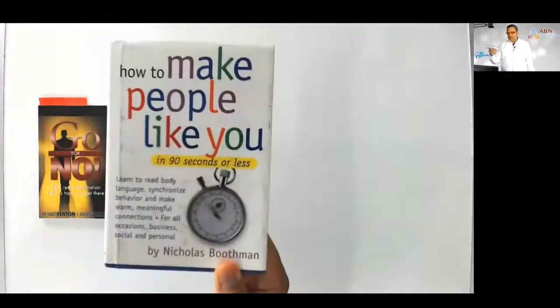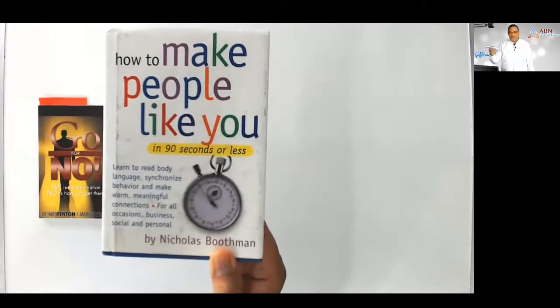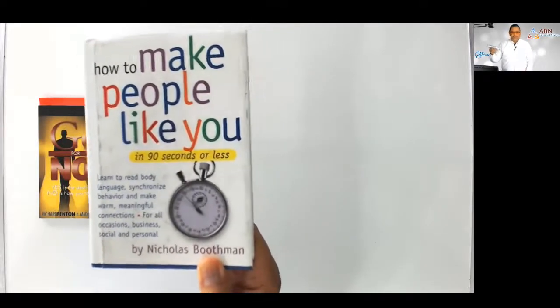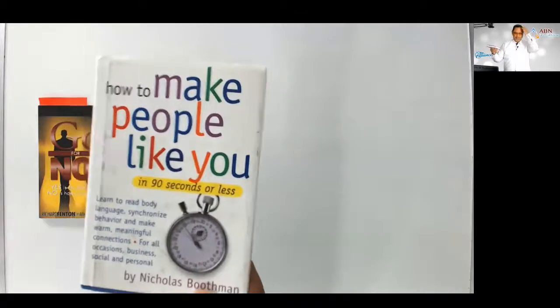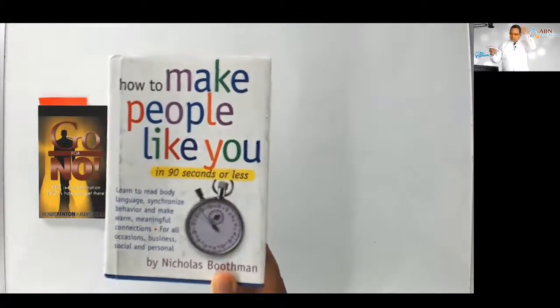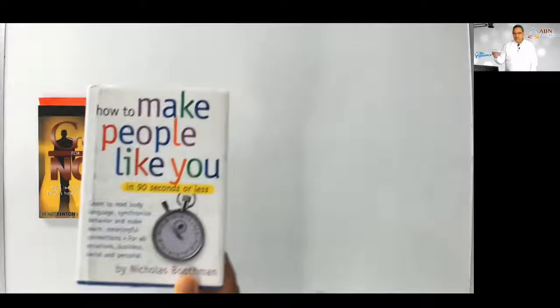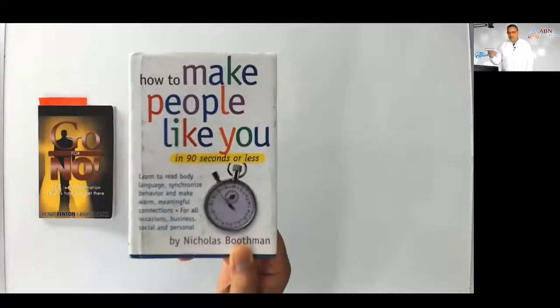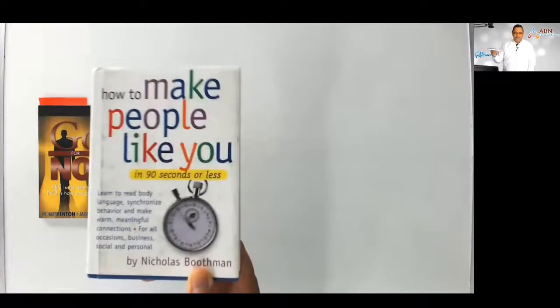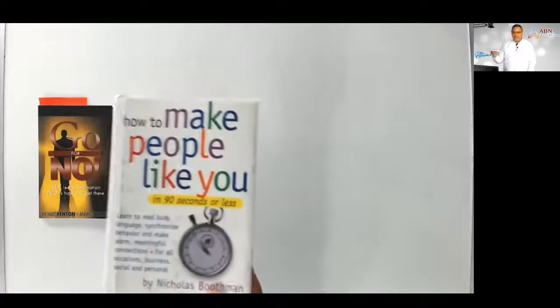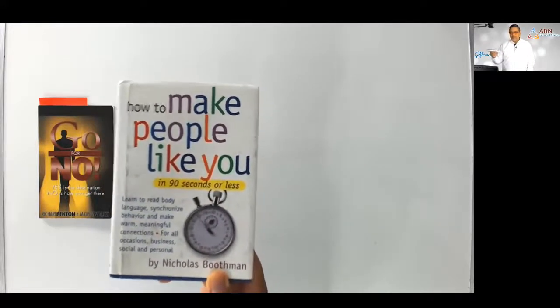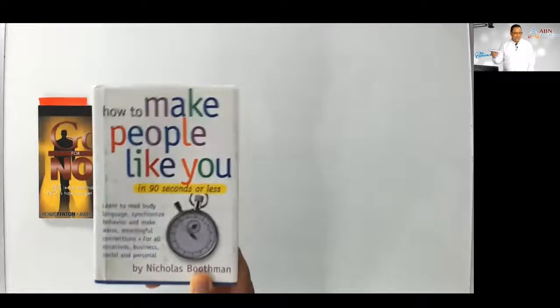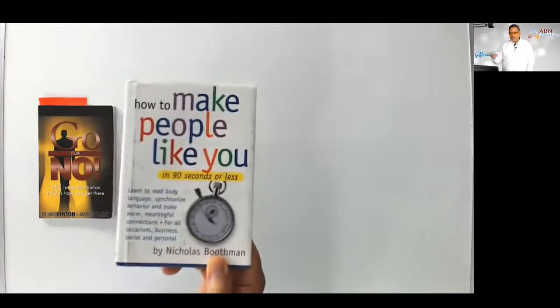The next book, which I think is very important, is called How to Make People Like You in 90 Seconds or Less by Nicholas Boothman. It uses a technology of influence called Neurolinguistic Programming, NLP. Nicholas Boothman's an NLP guy, as am I. I've been practicing NLP for years and years, and a lot of our training incorporates neurolinguistic programming techniques.